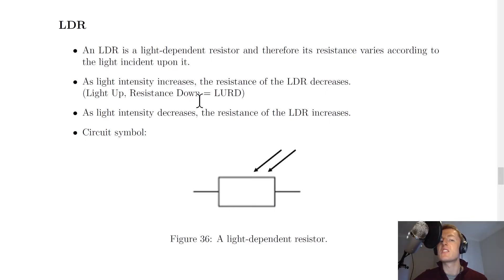So light up, resistance down, which can be summarized using LURD. And the opposite of this is also true. So light down, resistance up. So as light intensity decreases, the resistance of the LDR increases.